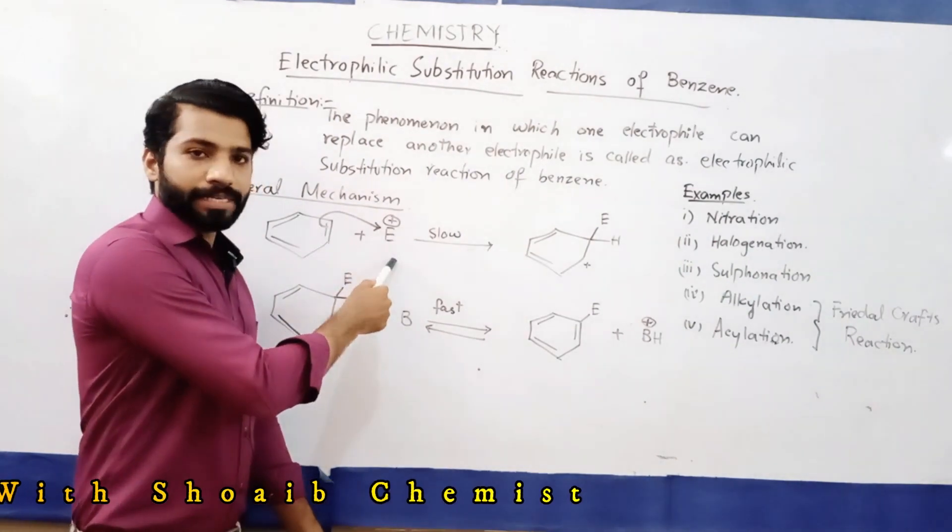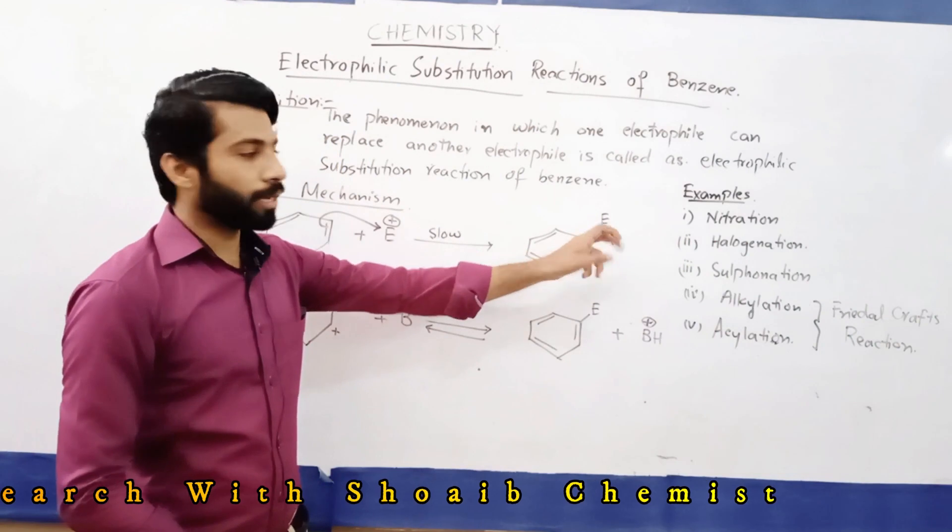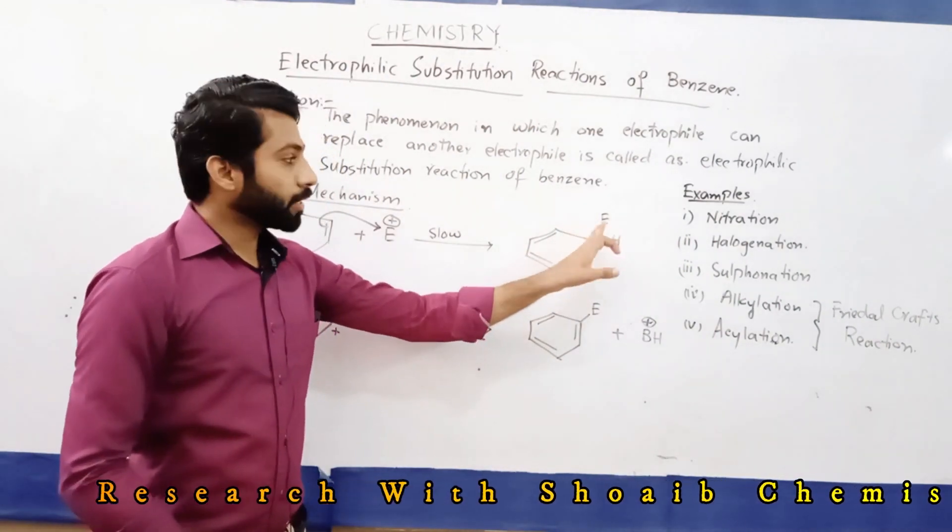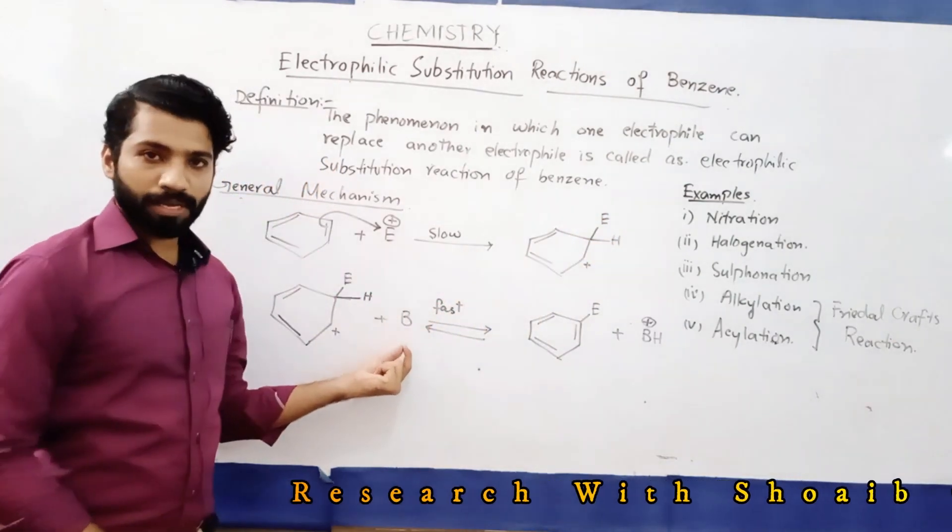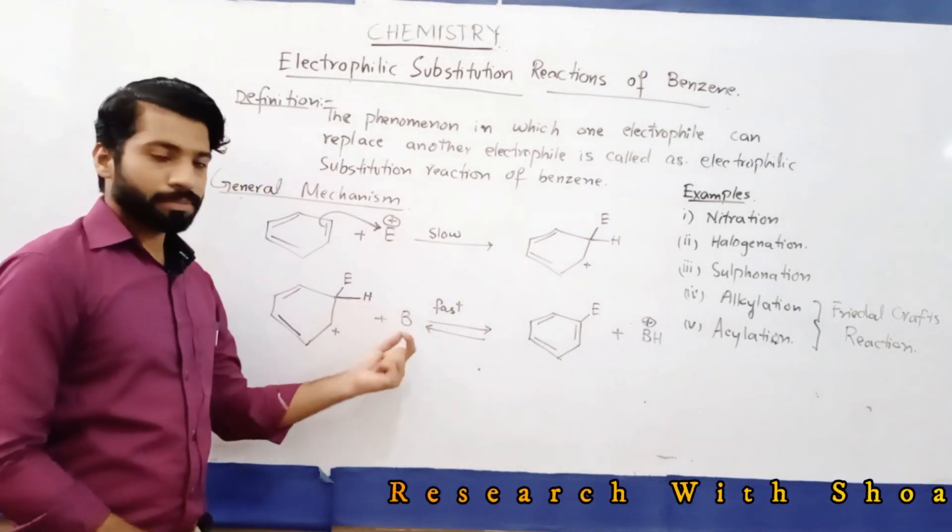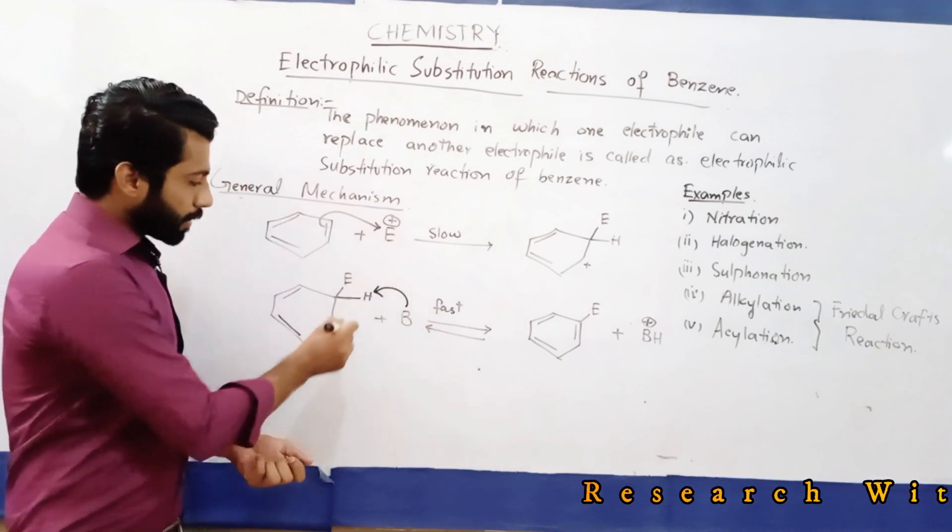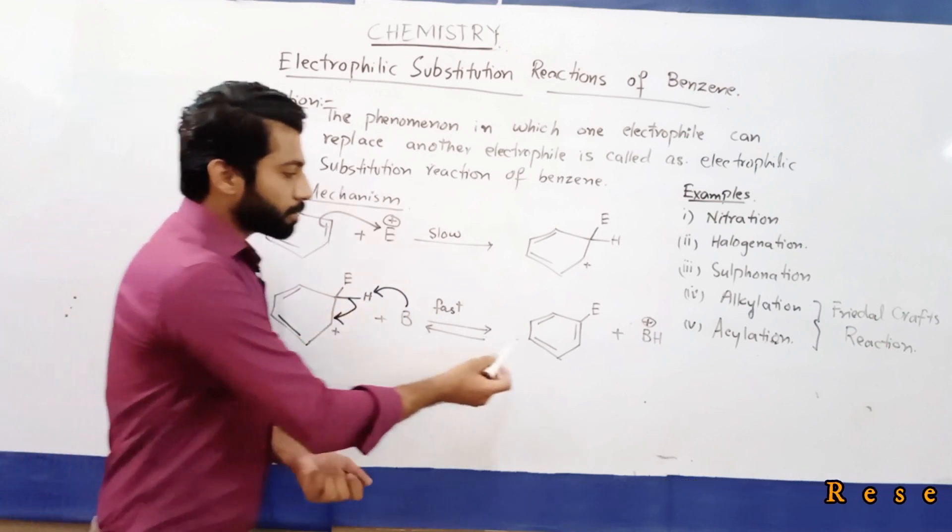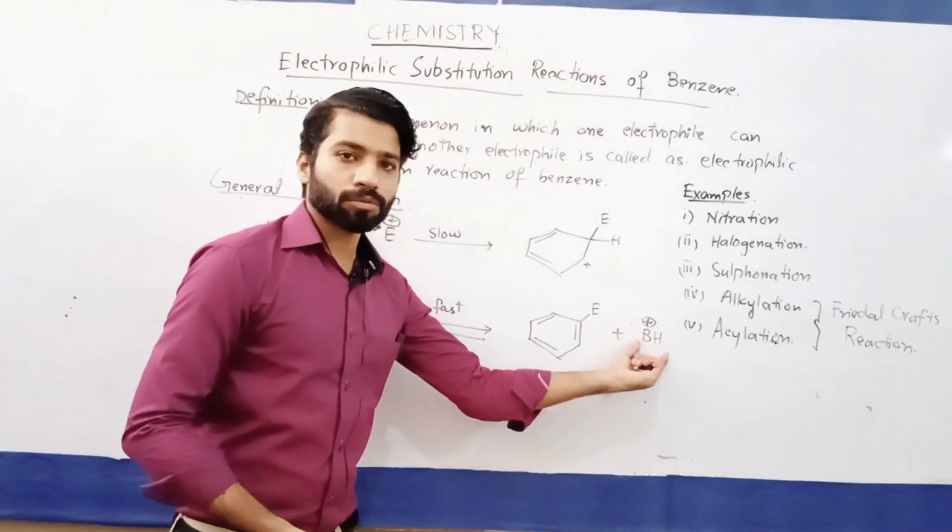After the electrophile attacks, an intermediate is formed. In the next step, a base will extract the hydrogen. The base attacks the hydrogen, which helps the benzene ring regain aromaticity. The benzene ring will regain aromaticity and hydrogen will be replaced.